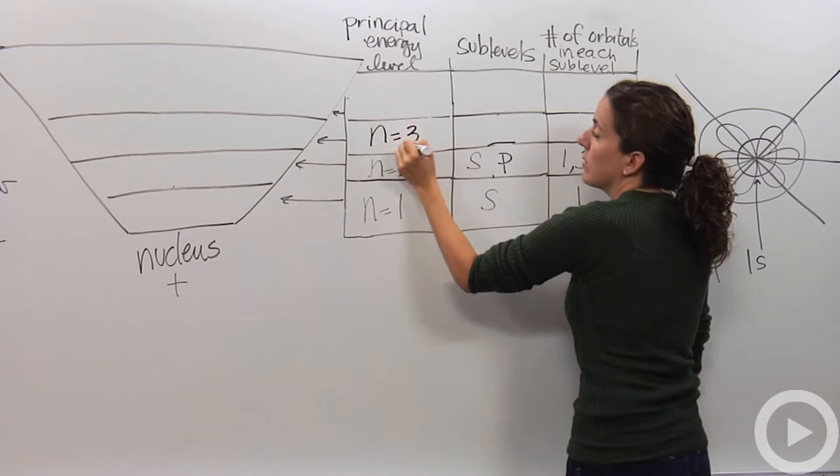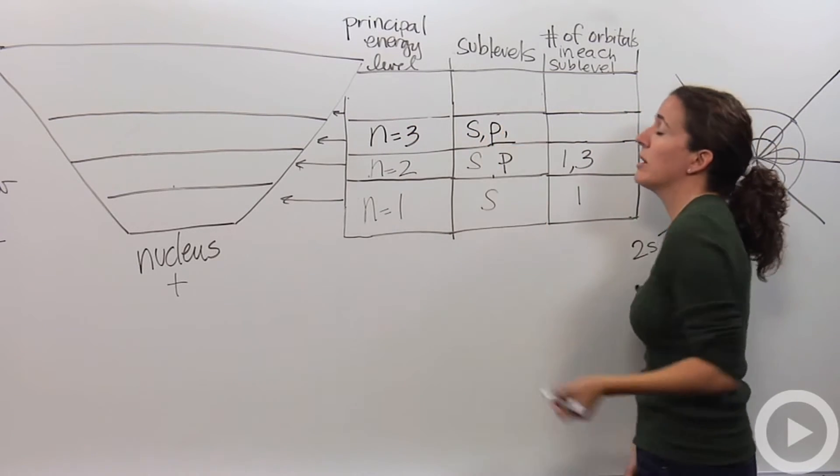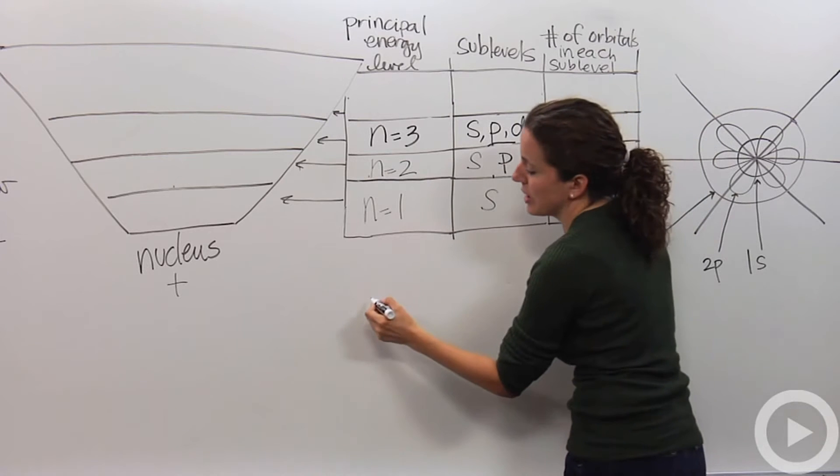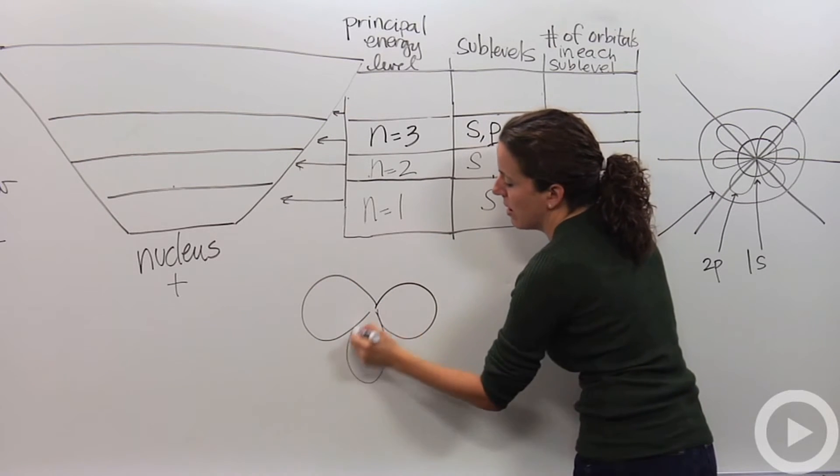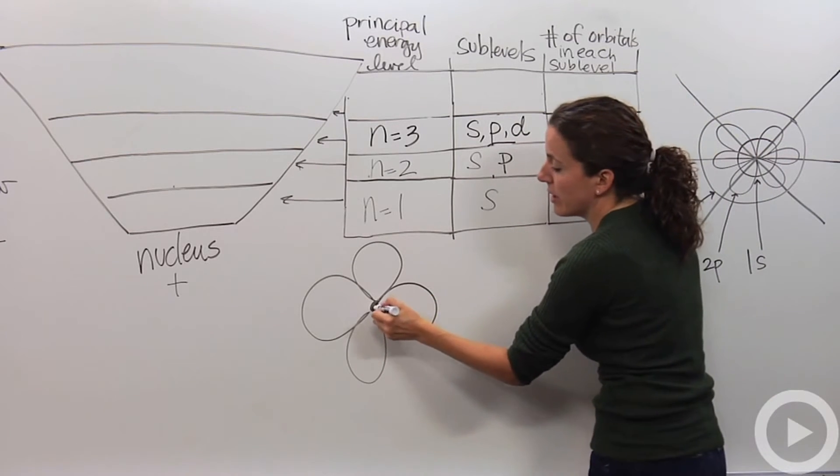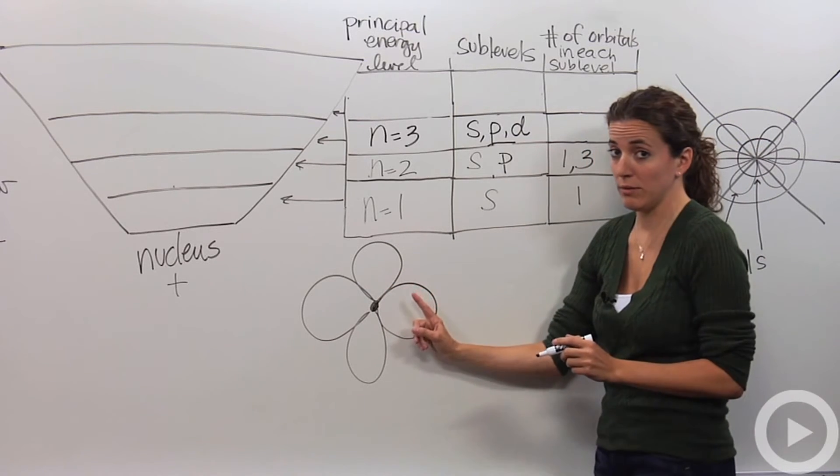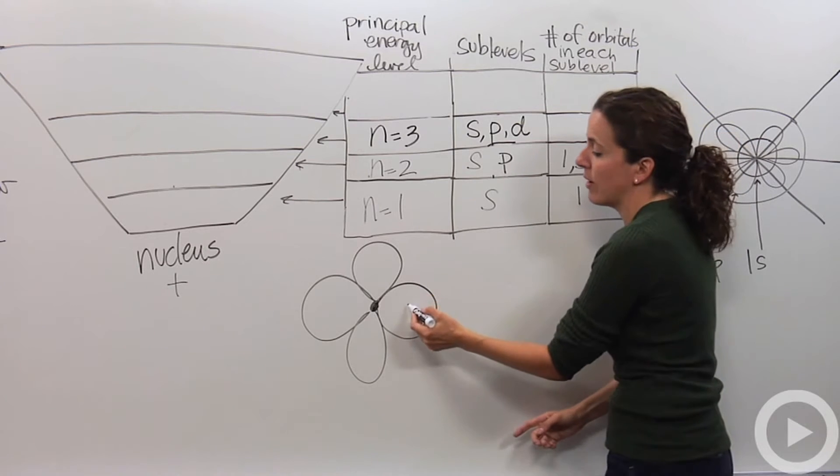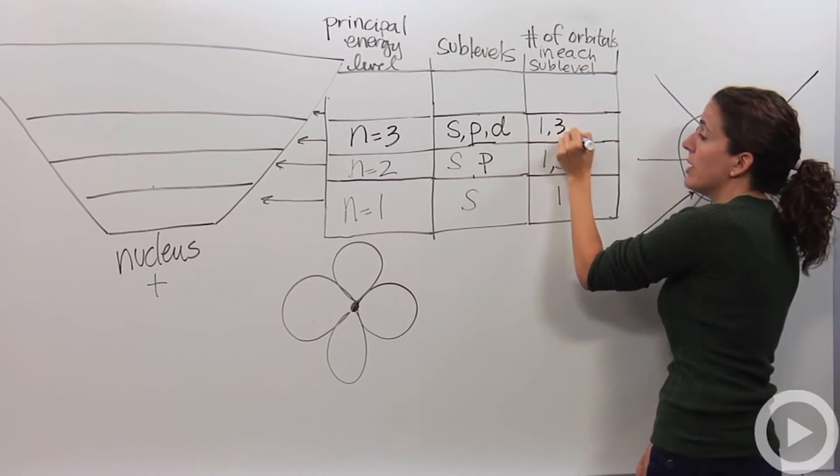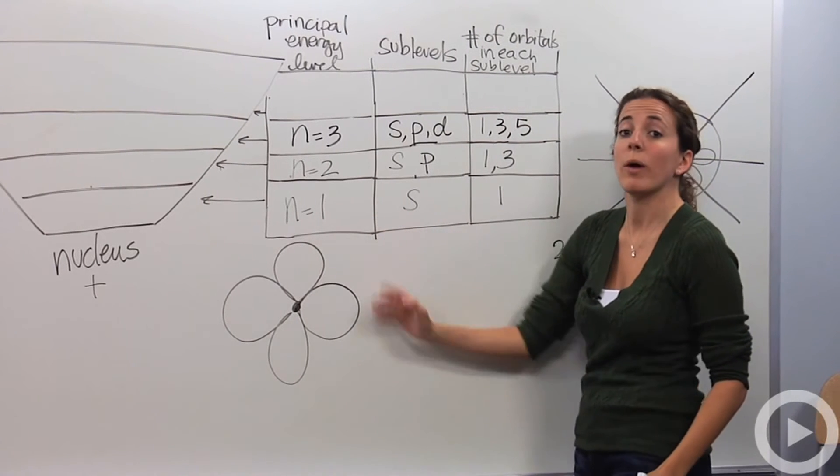In the n equals three, it also has s orbitals, it also has p orbitals, but it also has a d orbital. D orbitals look like flowers, a little more complicated, I didn't get a chance to make it in balloons because it's a little bit harder. But it looks like a clover. And so the nucleus is found here, and the electron can be found in any four of these places. This is just one orbital, not four orbitals. So you can find there's one s orbital, three p orbitals, and five d orbitals. They can be oriented in different ways along the axis.